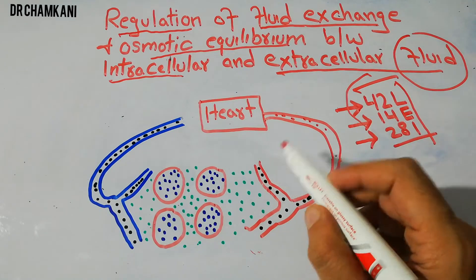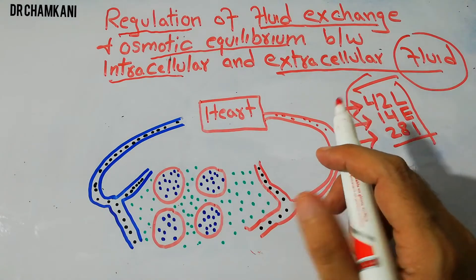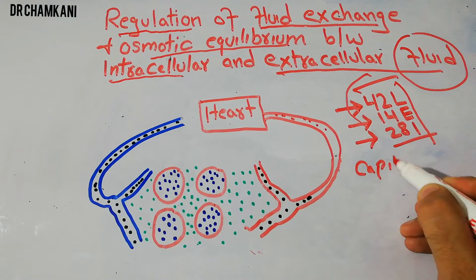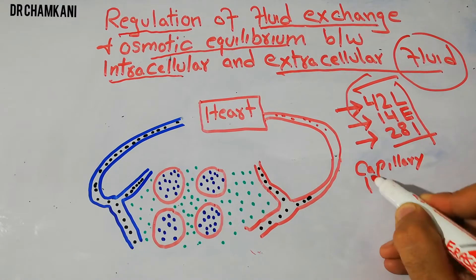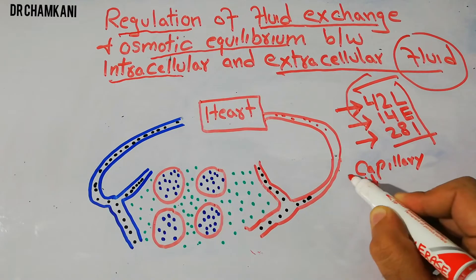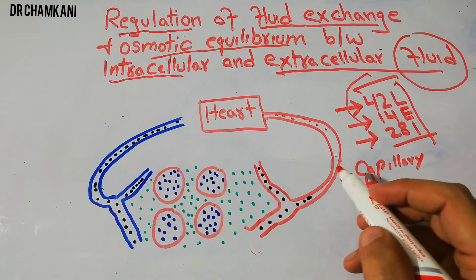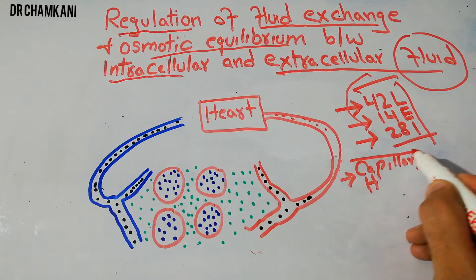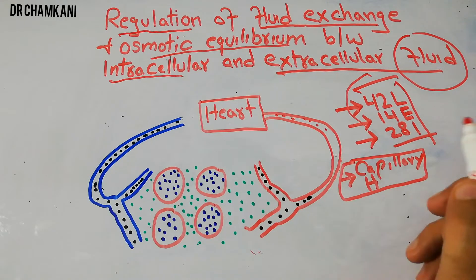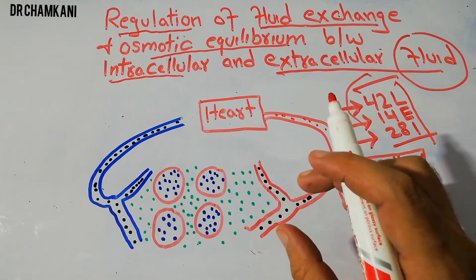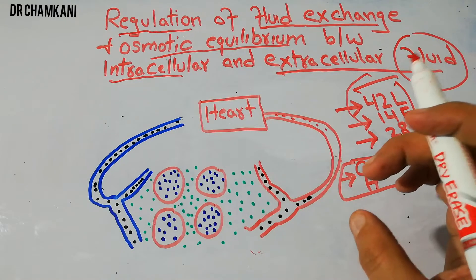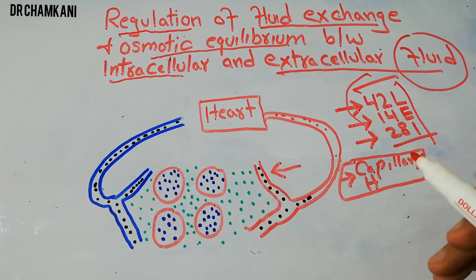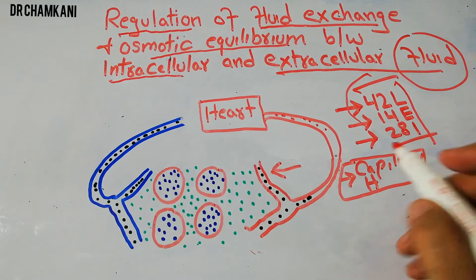The first force present in the plasma is the capillary hydrostatic pressure. This pressure is present due to the movement of the fluid molecules in the plasma or in the blood, and this pressure basically forces the fluid out of the capillaries into the interstitial fluid.